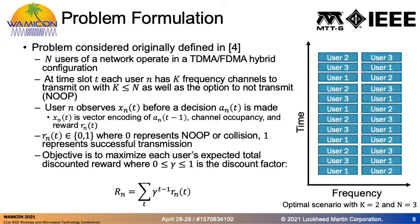With that background, we move into the problem formulation motivated by previous work, where N users of a network operate in a TDMA-FDMA hybrid configuration. At each time slot t, each user n has K frequency channels to transmit on, or can decide not to transmit at all. Before making action a sub n of t, the user n observes x sub n of t — a vector encoding of the previous action taken, the channel occupancy at the previous time step, and the reward r sub n of t. Rewards take values of 0 or 1, where 0 represents an unsuccessful transmission or a decision not to transmit, and 1 represents a successful transmission.